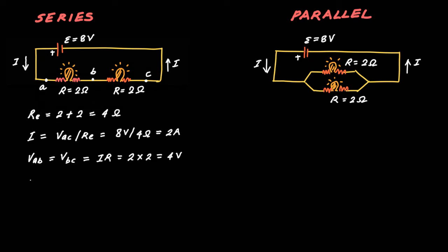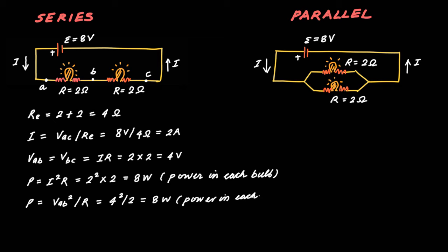We can calculate the power delivered to each bulb as P is equal to I square R, that is 2 square into 2, which equals 8 watts. Let me actually write here, power in each bulb, to avoid any confusion. We could have also used the formula P is equal to VAB square upon R, which equals 4 square upon 2, that is 8 watts. Both the formulas for power give the same answer. The total power delivered is then 2 into 8, that is 8 watts from each bulb, which equals 16 watts.